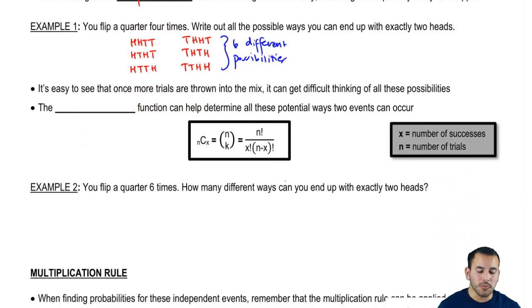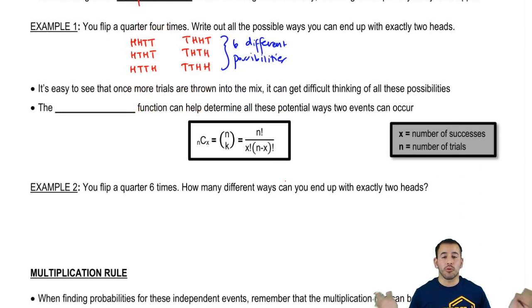Now, it's easy to see that once more trials result into the mix, it can get difficult thinking of all these possibilities. For example, if I told you 10 quarters that we're flipping, how many ways can we get three heads? That gets very messy. So instead of doing that, we use the combination function to help us determine all these possible ways that a series of events can happen.